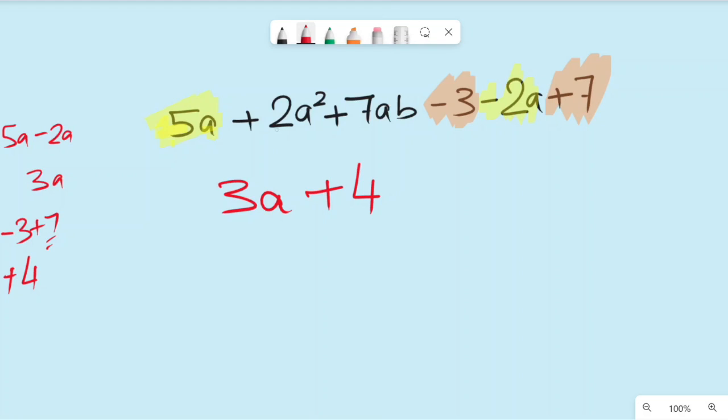Now I can see 2a square has no other term which is like the same, having the same variable a square. So 2a square, you cannot solve it anymore. So it will be just 2a square. Same thing with 7ab. It doesn't have any other number with ab. So it will be 7ab. And that's our final answer.